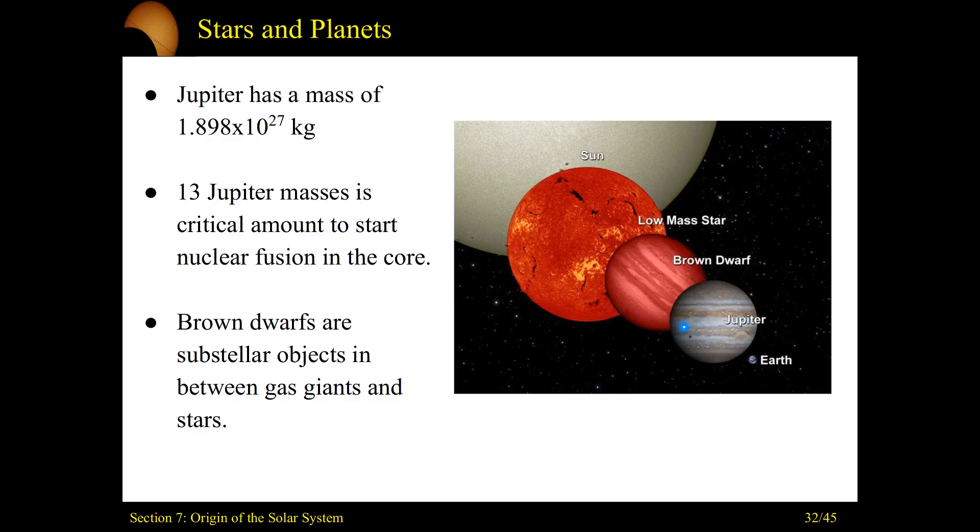In between this, between a gas giant and a star, there are the brown dwarfs, also known as sub-stellar objects. They're just not quite stars yet, but they are close. If they were a little bit more massive, you would get a fusion of hydrogen out there.